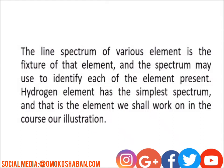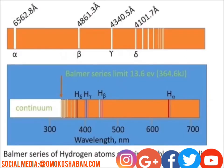The hydrogen element has a simpler spectrum, and that is the element we shall work on in the course of our illustration. This is the picture that depicts the spectrum we are talking about here. You can see this is the Balmer series. The Balmer series of hydrogen atoms shows the visibility of a line. Here is the continuum — it comes to a point where the series will cluster in one place, forming a continuum.